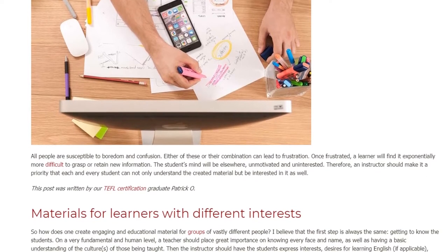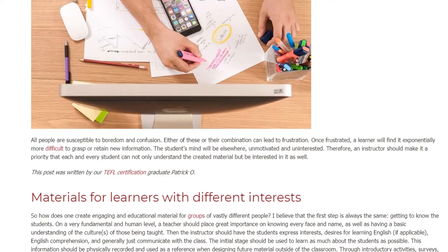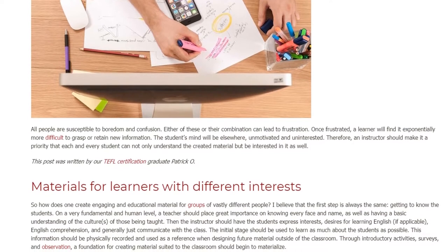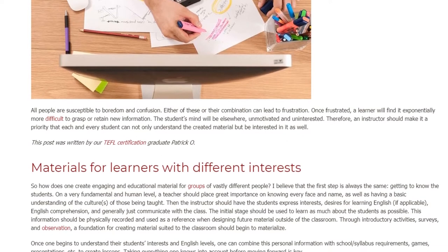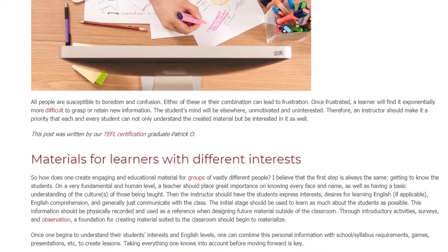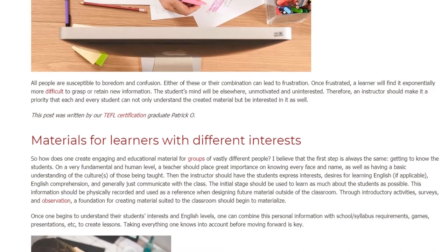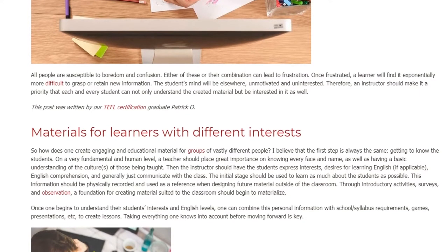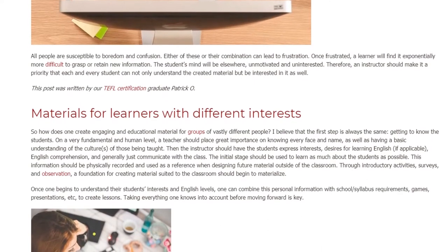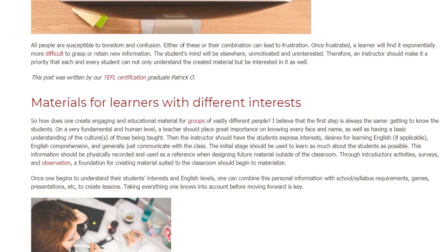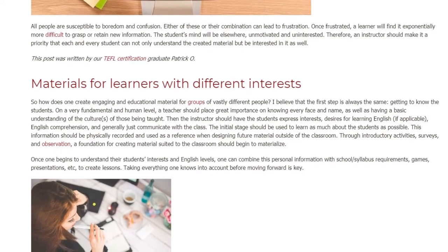So how does one create engaging and educational material for groups of vastly different people? I believe that the first step is always the same: getting to know the students. On a very fundamental and human level, a teacher should place great importance on knowing every face and name, as well as having a basic understanding of the culture of those being taught. Then the instructor should have the students express interests, desires for learning English, English comprehension, and generally just communicate with the class. The initial stage should be used to learn as much about the students as possible. This information should be physically recorded and used as a reference when designing future material outside of the classroom.